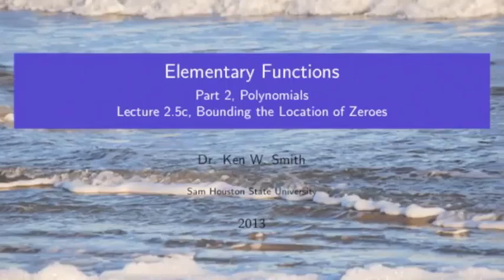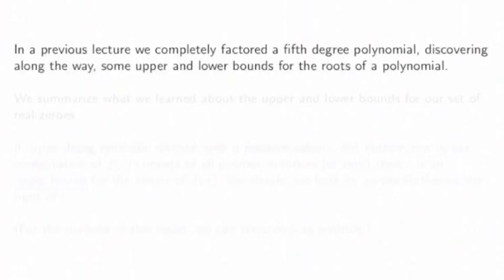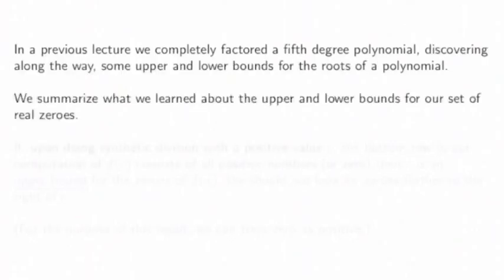In this presentation, we discuss the location of zeros for a polynomial. In an earlier lecture, we completely factored a fifth-degree polynomial, discovering along the way some upper and lower bounds for the roots of the polynomial. Let's summarize what we learned about the upper and lower bounds for our set of real zeros.